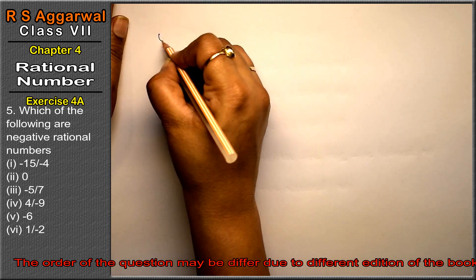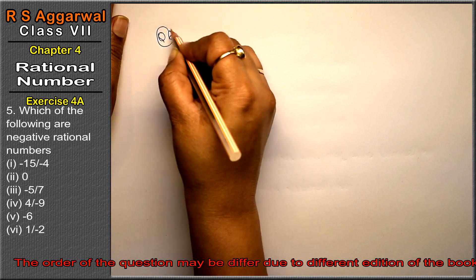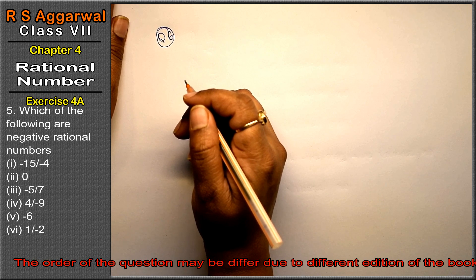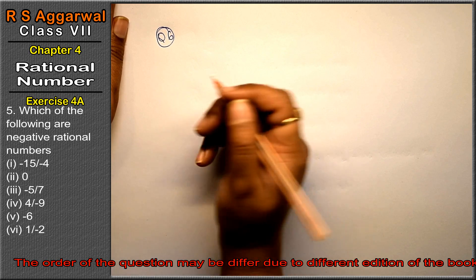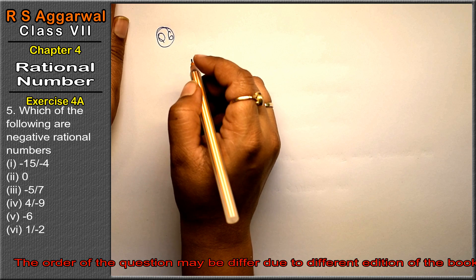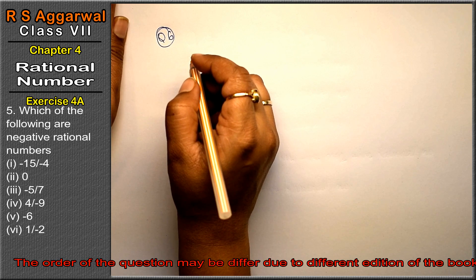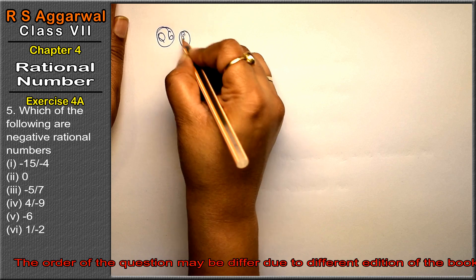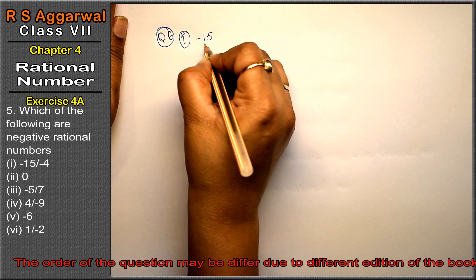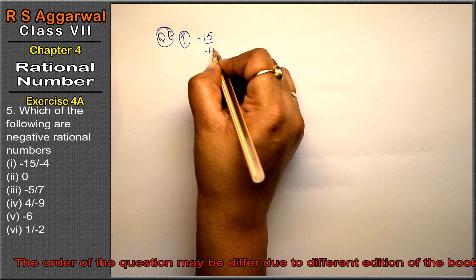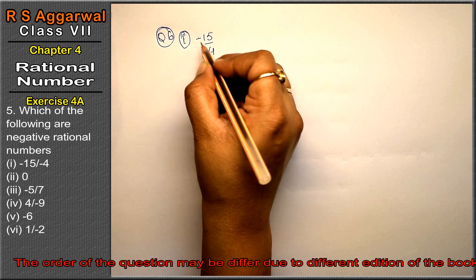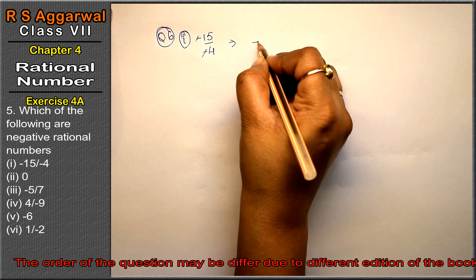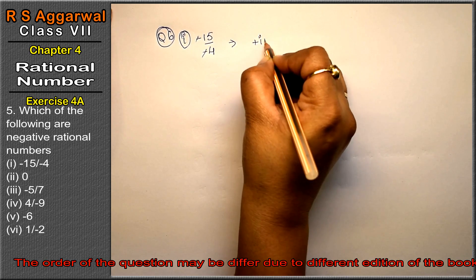Let's do question number 6 of exercise 4a. Question number 6 is: which of the following are negative rational numbers? First part is minus 15 upon minus 4. Both are negative so they cancel out — it becomes positive. It is not a negative rational number; it is a positive rational number.